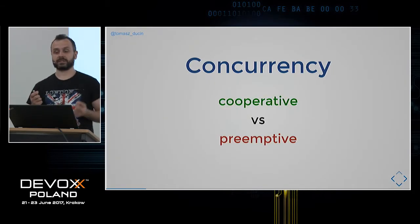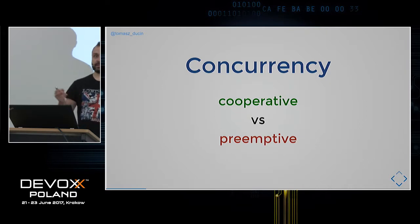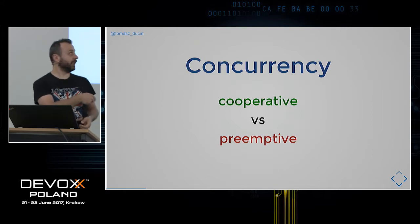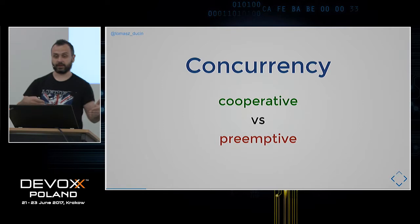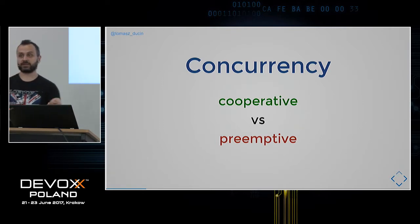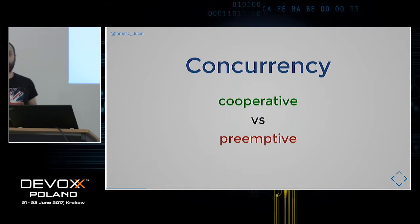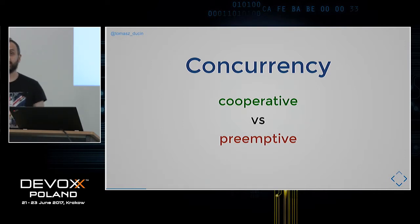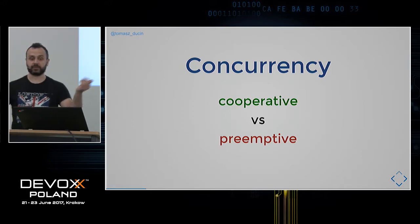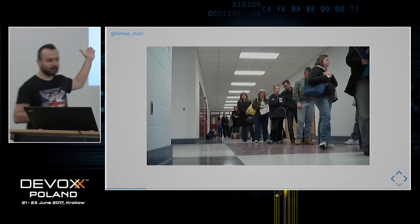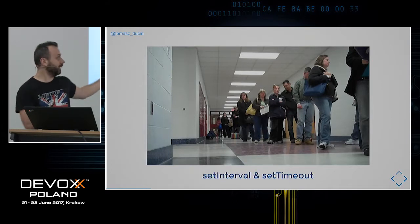There are two fundamental concurrency models: cooperative, where all tasks are equally important, and preemptive, where some tasks are more important than others. In cooperative concurrency, once someone has started a job there's no way to kick them out of the queue. In preemptive, a more important task can come and execute immediately. An operating system is an example of preemptive concurrency. JavaScript uses cooperative concurrency.